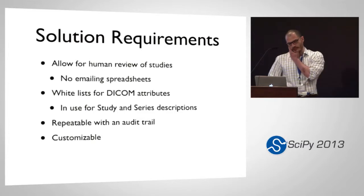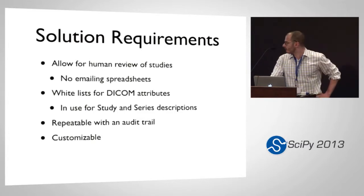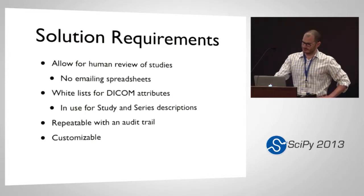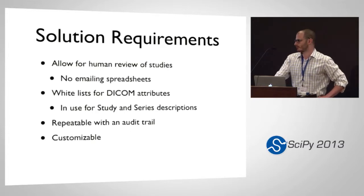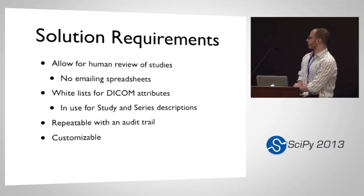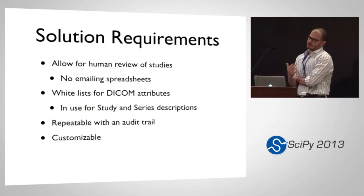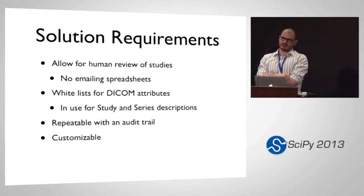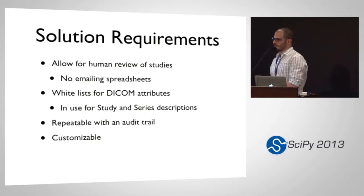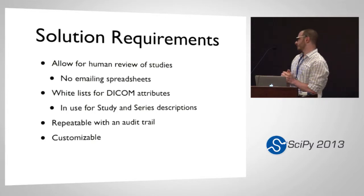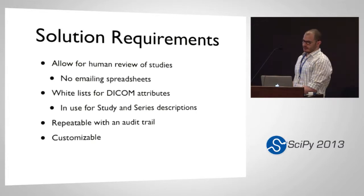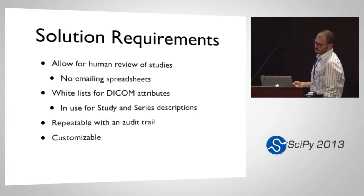Summing up some of the solution requirements: we want to allow for human review of studies, and we don't want to be emailing around spreadsheets, which is how we started. That gets to be a problem — you have a bunch of different copies of a spreadsheet and it's impossible to distribute the workload. We also want to have a whitelist for DICOM attributes. The DICOM standard proposes that if you want to call something anonymized, you have to remove or anonymize certain fields like the study description; since that information can be vital to the study, we want a whitelist of things that are actually allowed and remove anything that's not. Importantly, this needs to be repeatable with an audit trail and customizable.